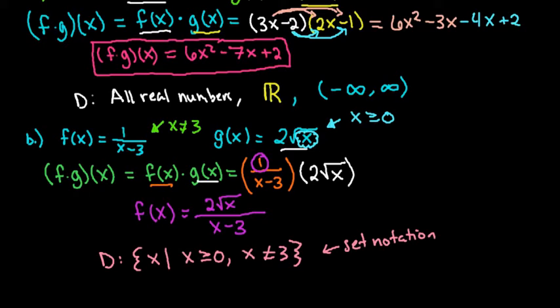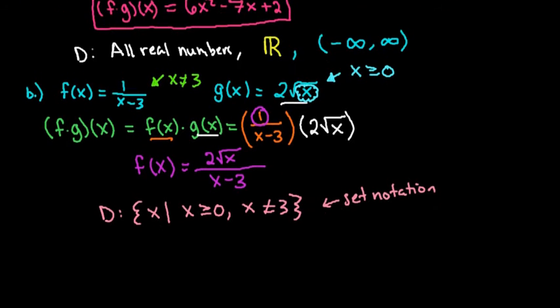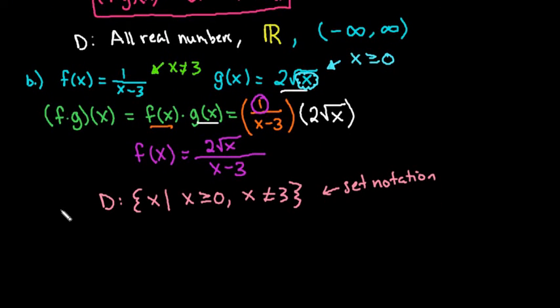And for interval notation, remember with interval notation we always start from left to right. So our lowest x value to the left is that x can be 0. So we would start with 0 and then we have to exclude 3. So we would say 0, remember the bracket means it includes it, the parenthesis means it does not include it. So everything from 0 to 3 would be included.